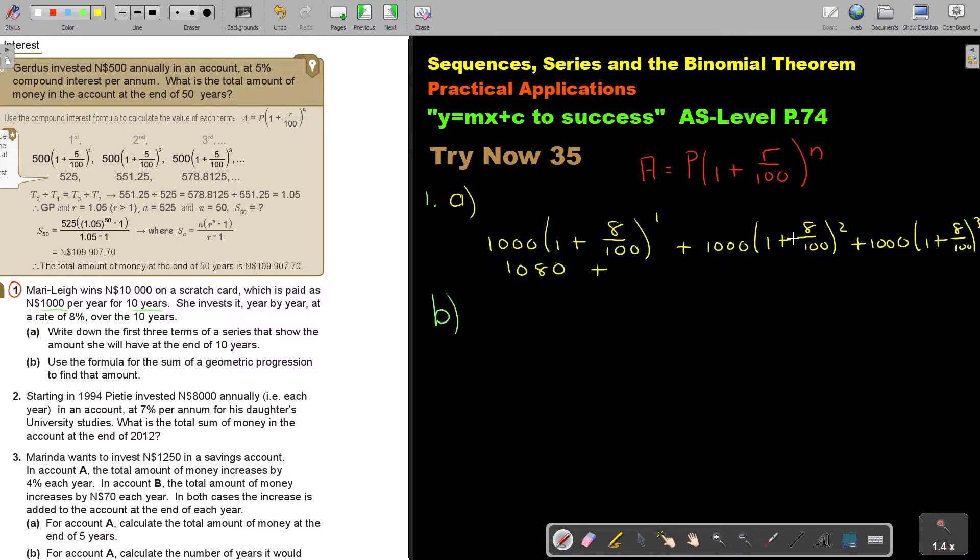So it's 8 divided by 100 plus 1 equals to the power of 2, to the power of 3 equals multiply. And that will be 1,259.712. So if I'm getting my value of A, it's 1080.